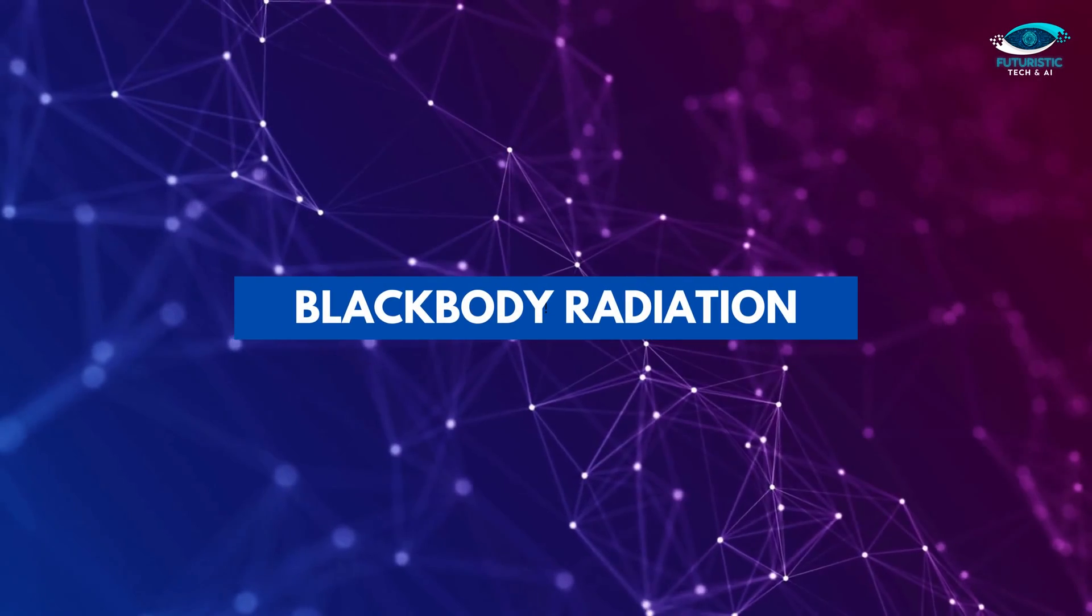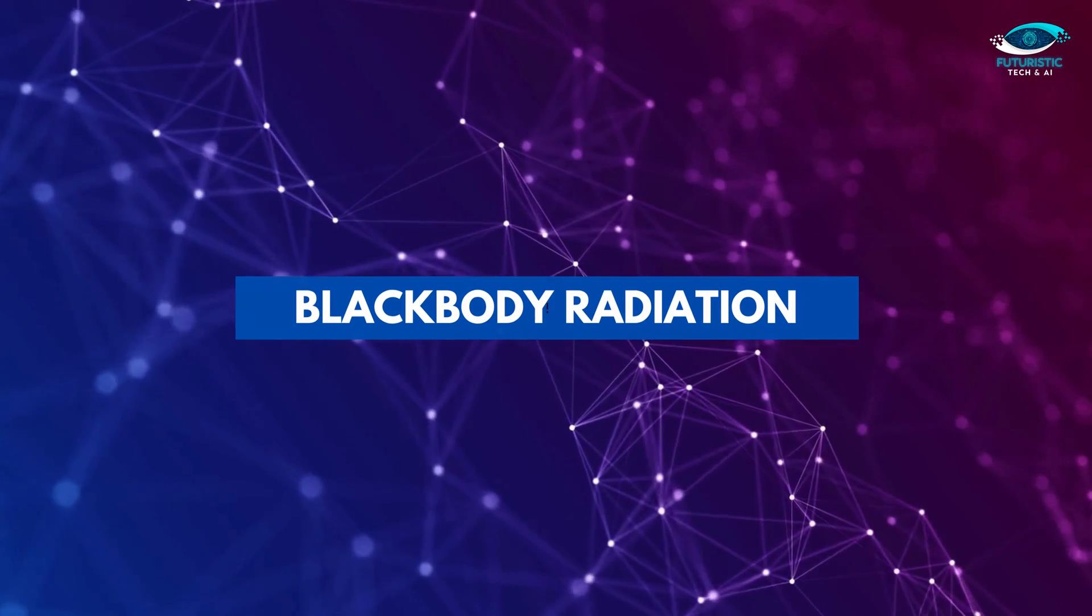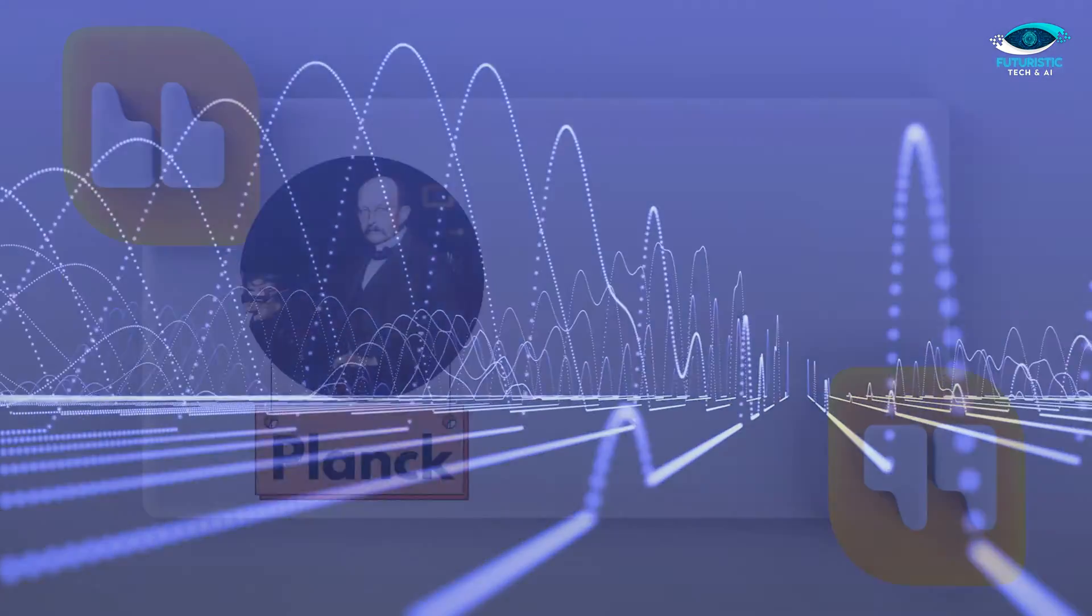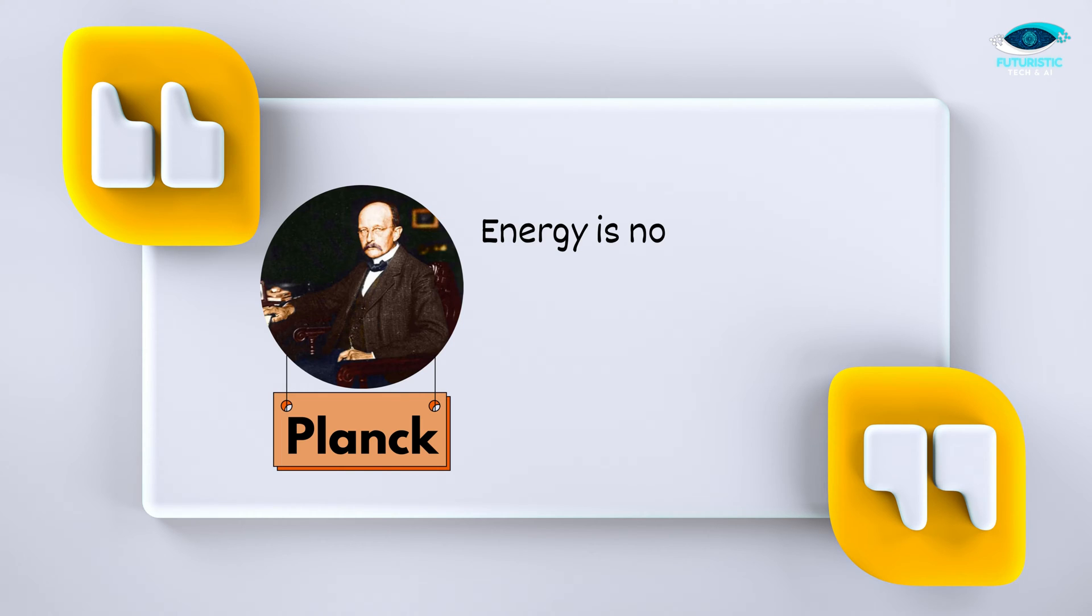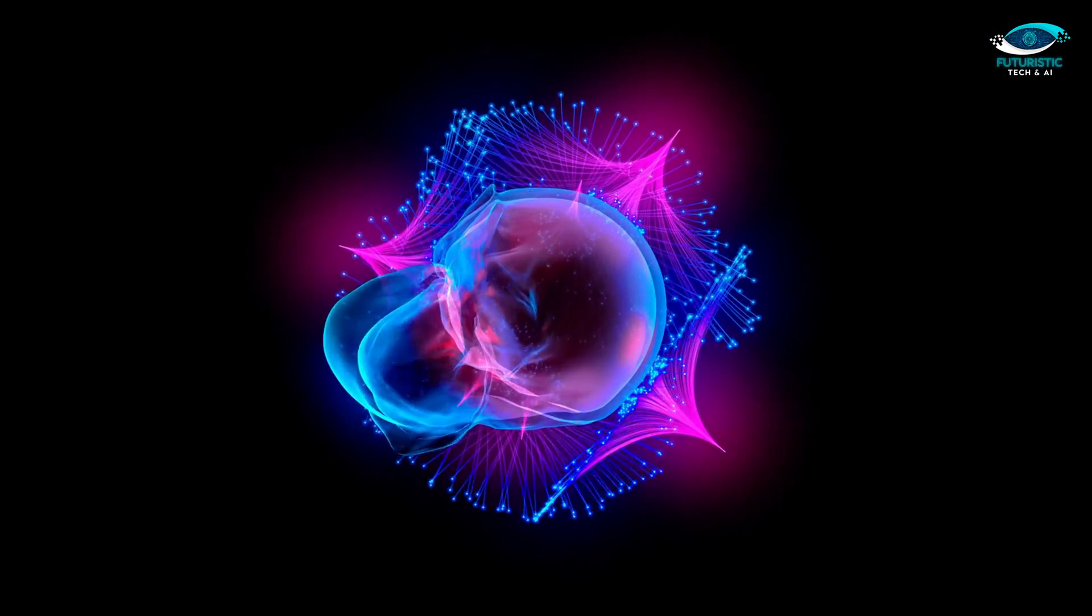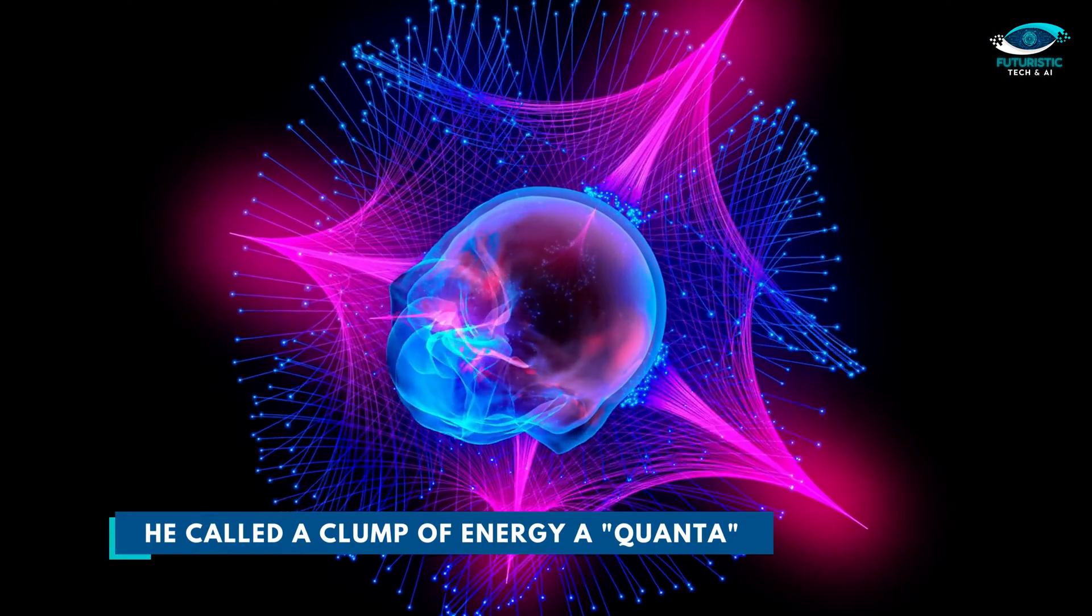Black body radiation. The classical idea that each frequency of vibration should have the same energy is wrong. Instead, according to Planck, energy is not shared equally by electrons that vibrate with different frequencies. Planck said that energy comes in clumps. He called a clump of energy a quanta.